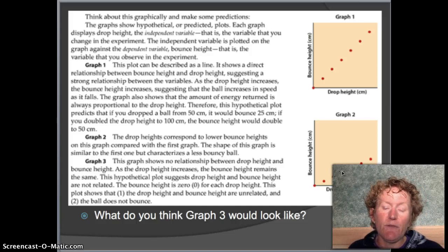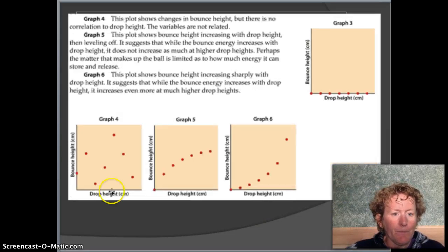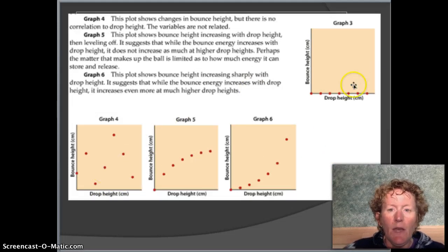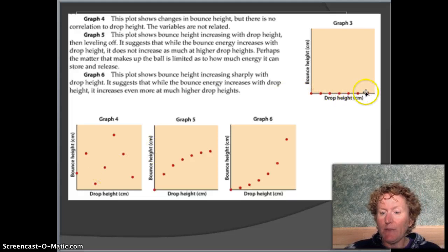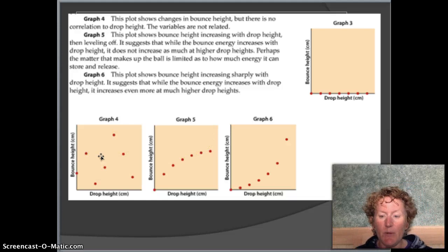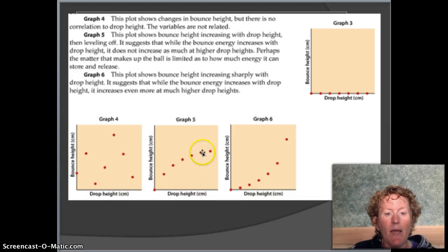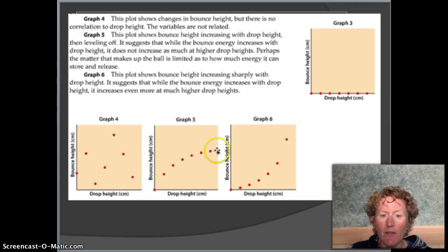Our job in this lab is to first make a hypothesis about what we think the relationship between drop height and bounce height is. There are a bunch of different graphs that show different relationships. Graph 3 kind of shows there isn't going to be a bounce height. Graph 4 shows that really it doesn't matter, there isn't any predictable relationship between the two. Graph 5 says that you can drop it from higher and higher, but eventually it's going to level off.